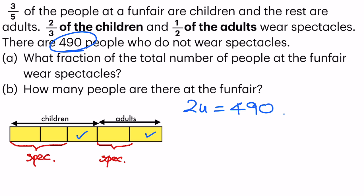Now, part A. What fraction of the total number of people, which is everyone here, children and adults together, at the funfair wear spectacles? So looking at the model, I know the total units is 5. So out of 5, how many units wear spectacles? I'm going to count 1, 2, 3. So the answer will be 3/5. That's the answer for part A.